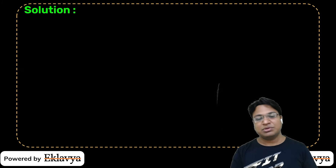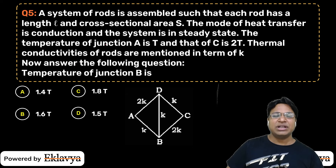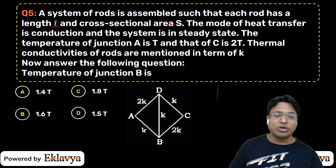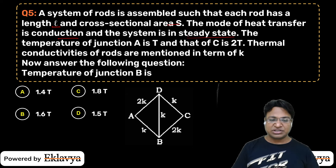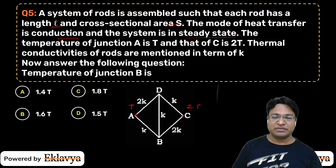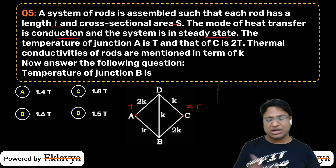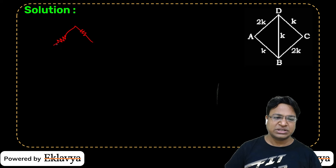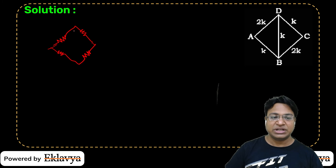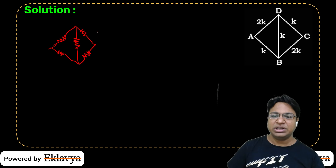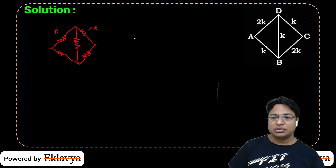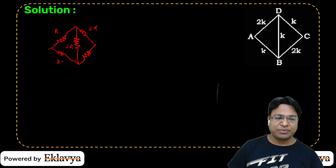Next question — conduction again. We have a system of rods, each with length L and cross-sectional area S. The system is in steady state. The temperature at junction A is T and at another end is 2T (fixed). Junctions B and D have unknown temperatures Tᵦ and Tᵈ. Converting this circuit to an electrical analog: where conductivity is double, the resistance is half. We assign resistances 2R and R accordingly. Temperatures T and 2T act like batteries.